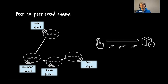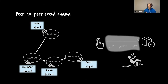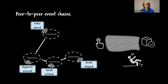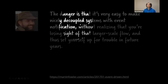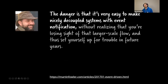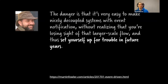The problem with event chains is that you lose sight of what's happening. You can't see the business process anywhere — you have to reason about different microservices and different event subscriptions. Martin Fowler, a credible source in our industry, blogged about this and wrote: 'The danger is that it's very easy to make nicely decoupled systems with event notification without realizing you're losing sight of a larger-scale flow.'